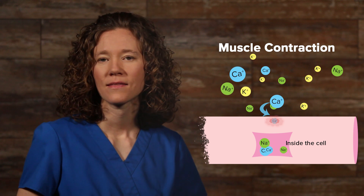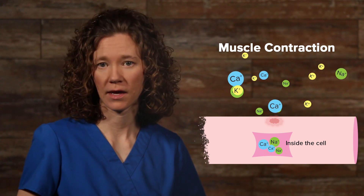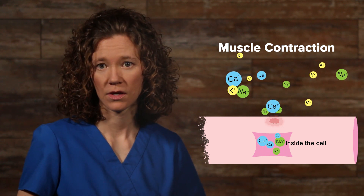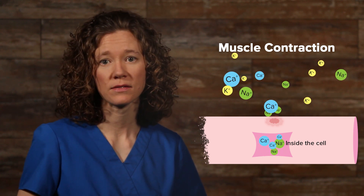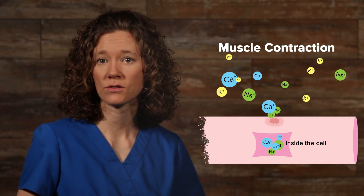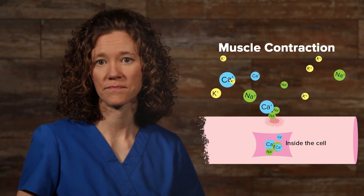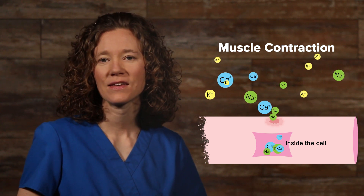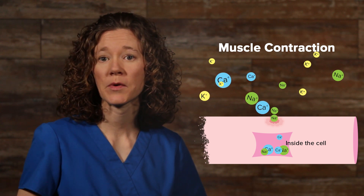The cell membrane contains L-type calcium channels through which calcium ions enter into the cell. These channels are responsible for regulating the entry of calcium into muscle cells, which stimulates vascular smooth muscle contraction.